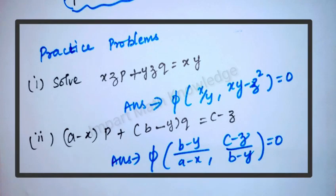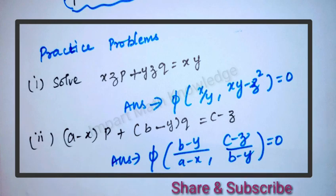To summarize: for solving Lagrange's linear equation, first write the auxiliary equation dx/P = dy/Q = dz/R. For finding constants c1 and c2, group the ratios, integrate, and simplify. Practice these problems in a similar manner for better understanding. Hope you all understand — thank you for watching.